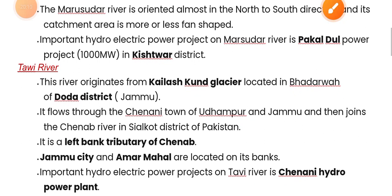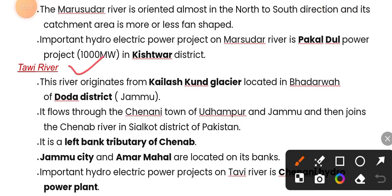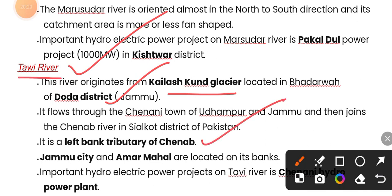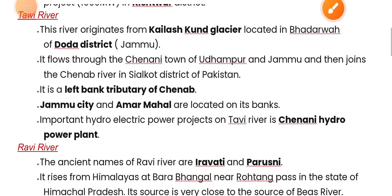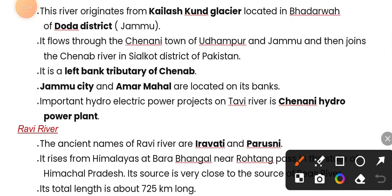The Tawi river originates from the Kailash Kund Glacier of Doda district of Jammu. It is a left bank tributary of Chenab. Jammu city and Amar Mahal are located on the Tawi river.